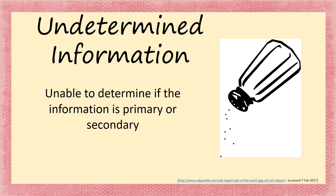Undetermined information is when we can't figure out where the information came from — we can't determine if it's primary or secondary. Until the 1940 census, we had no idea who gave the information about a household to the census enumerator. It could have been the husband, the wife, one of the older children, the next-door neighbor, the postman, or the local storekeeper. We just don't know for sure.